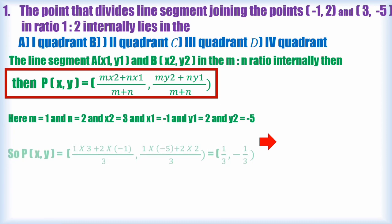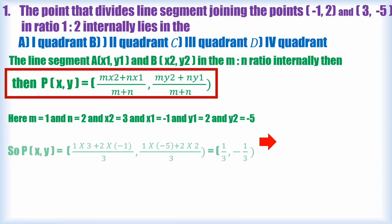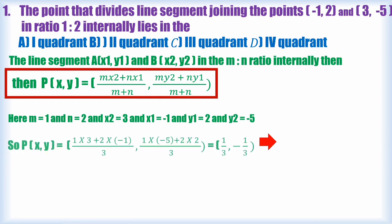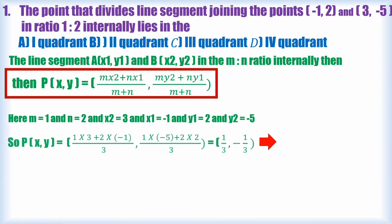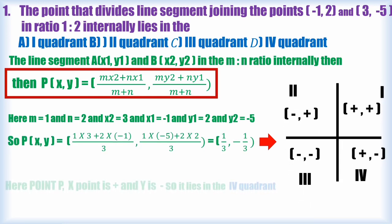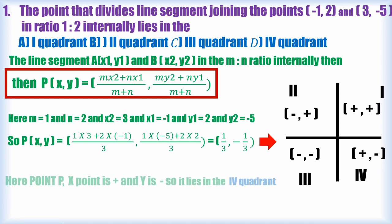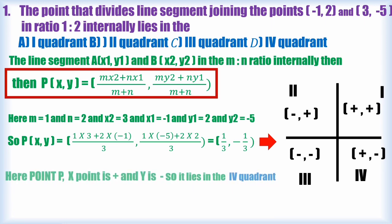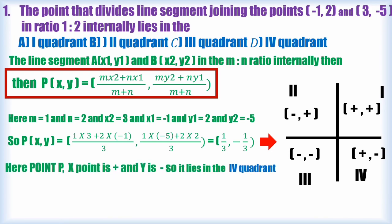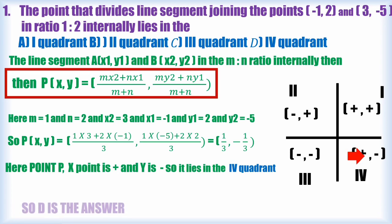Substituting: x = (1×3 + 2×(-1)) / (2+1) = (3 - 2) / 3 = 1/3. And y = (1×(-5) + 2×2) / 3 = (-5 + 4) / 3 = -1/3. So x is positive and y is negative, which lies only in the fourth quadrant.